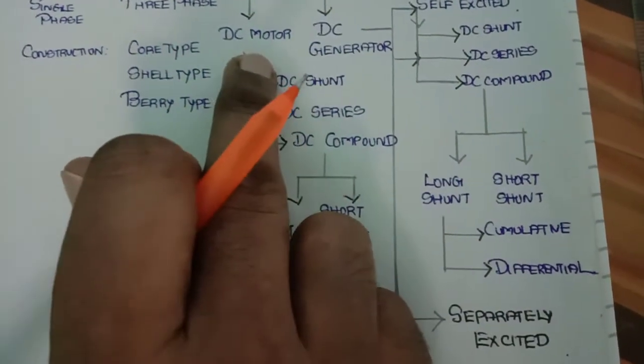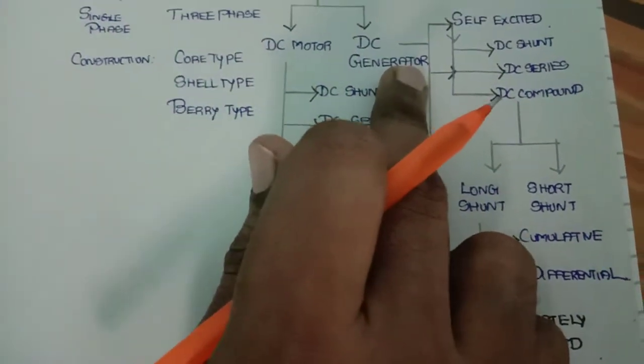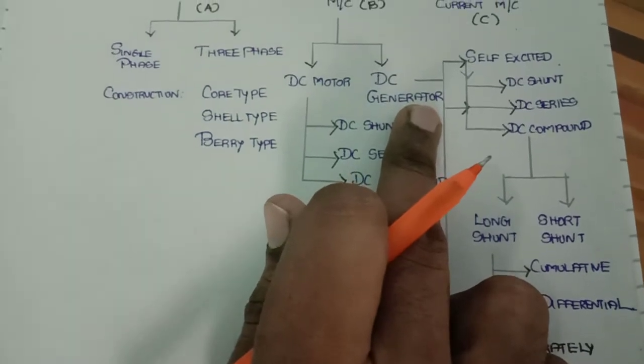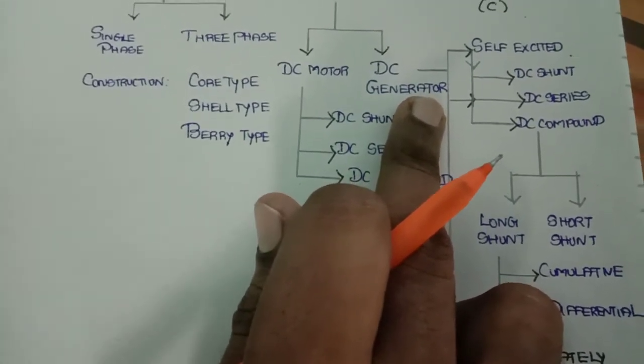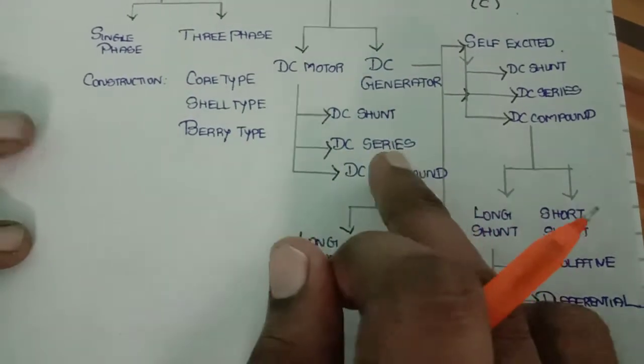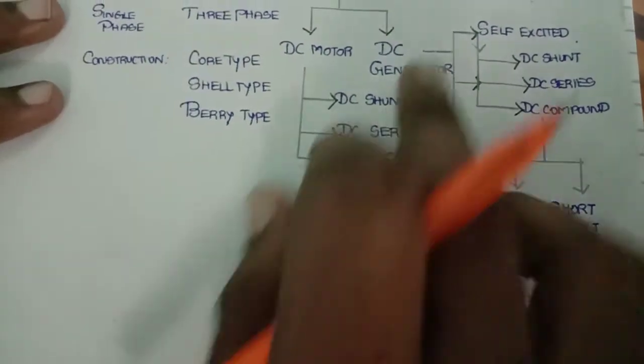Normally, when you are talking about a motor or generator, the construction parameters will be the same. The construction of a machine, whether motor or generator, will be the same. Only the working principle will be different. This can be explained in future lectures.